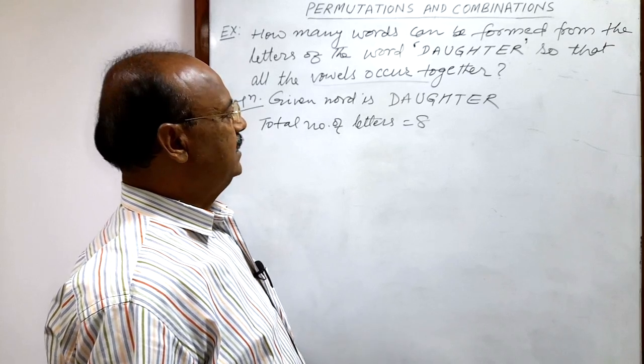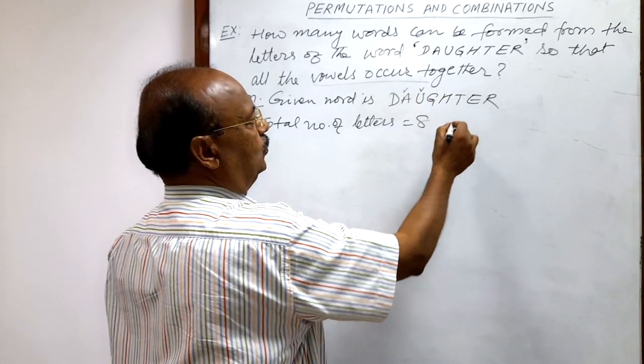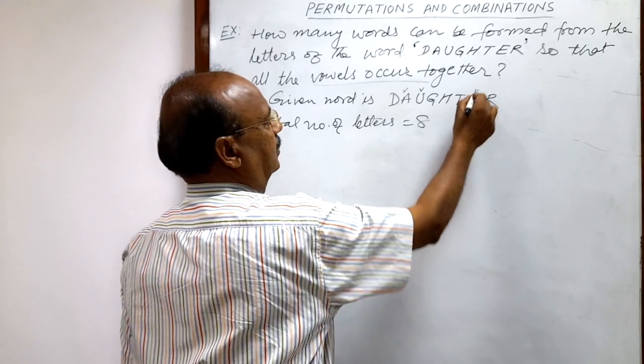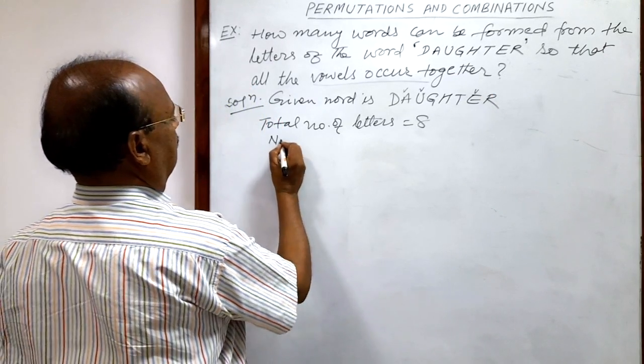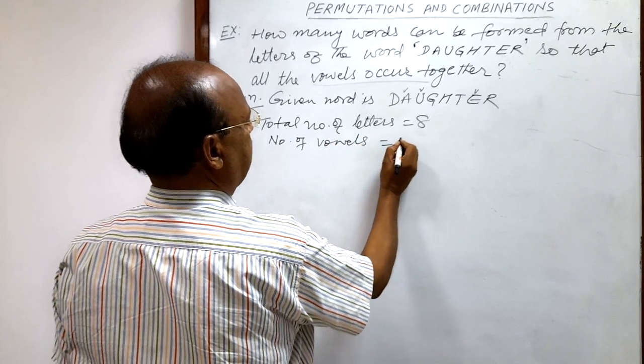And number of vowels is 3: A, U and E. Number of vowels is 3.